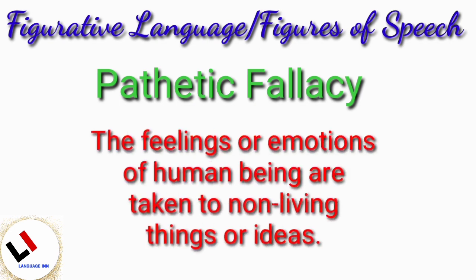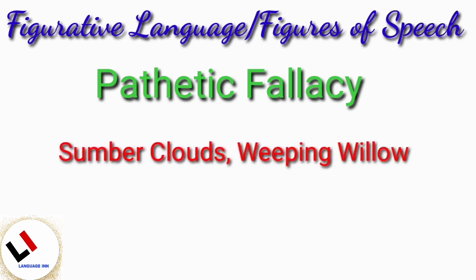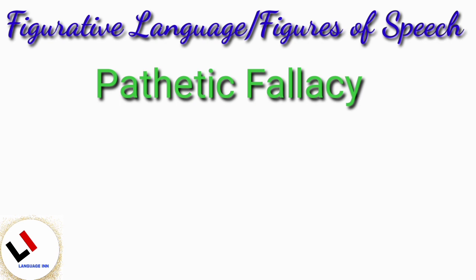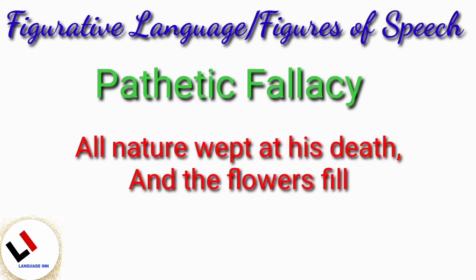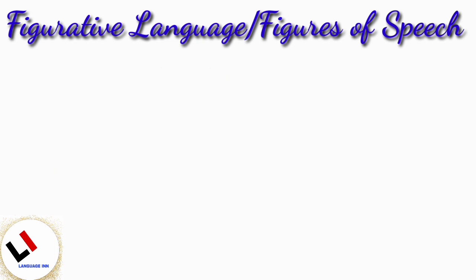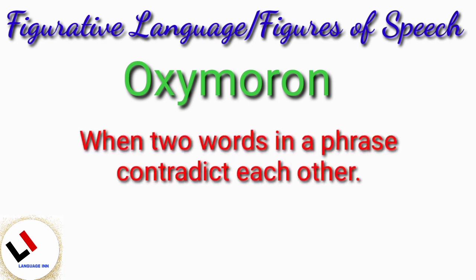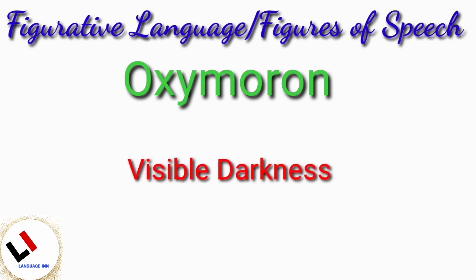Pathetic fallacy. Pathetic fallacy is a figure of speech where the feelings or emotions of human beings are attributed to non-living things or ideas. Examples of pathetic fallacy words include: somber clouds, weeping willow. In a sentence: all nature wept at his death, and the flowers filled with tears.